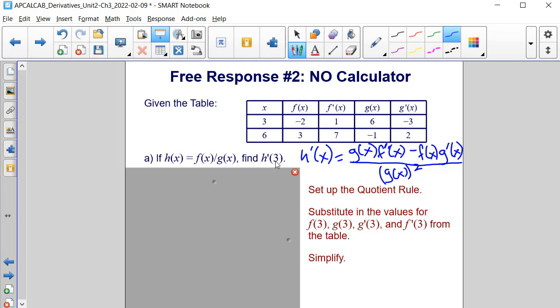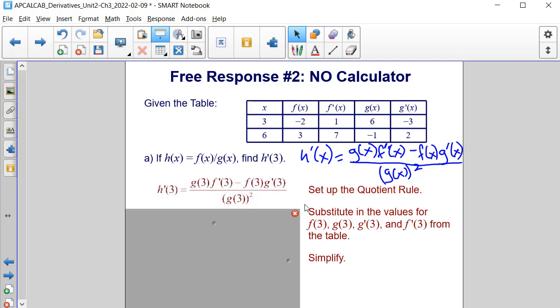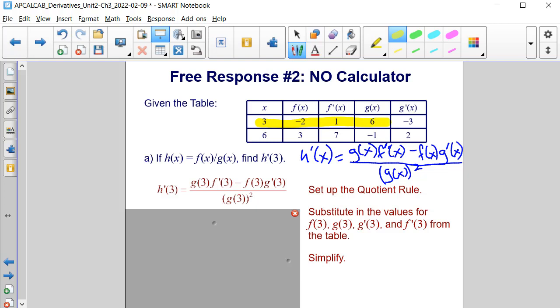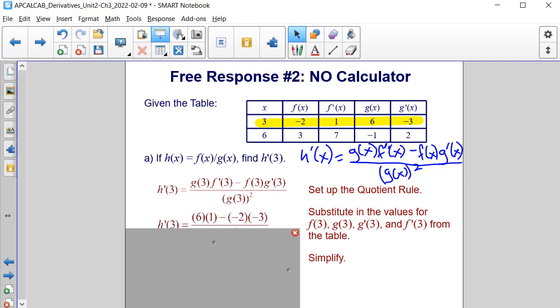And since we're evaluating this at 3, we can then rewrite the quotient rule with 3s in place of our x values. From here, we are going to look at our table and use the row of function and derivative function values when x is 3. So if we substitute those values into our formula, we'll have 6 times 1 minus negative 2 times negative 3, all over 6 squared. So we'll have 6 minus 6, which is 0, over 36, which is 0. So h prime of 3 is 0.